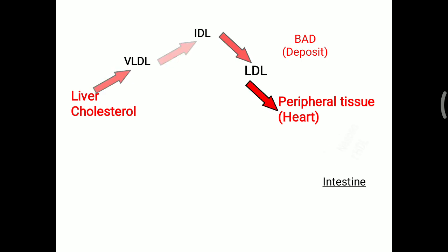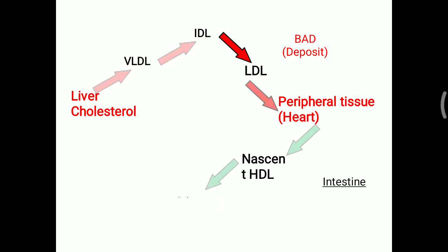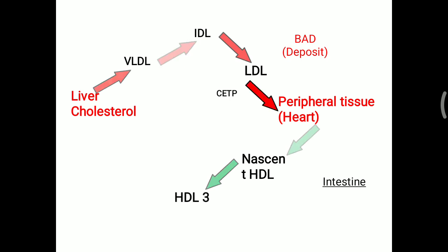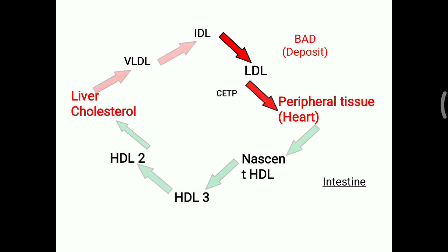Conversely, the intestine produces nascent HDL — newly synthesized HDL — which is initially discoid in shape. This nascent HDL takes up cholesterol from peripheral tissue. The nascent HDL is then converted into HDL3. HDL3, containing cholesterol ester, can have its cholesterol ester transferred by cholesterol ester transfer protein to VLDL and LDL; in exchange, HDL3 receives triacylglycerol and is converted into HDL2. HDL2 is then taken up by the liver.